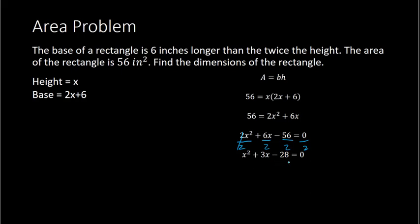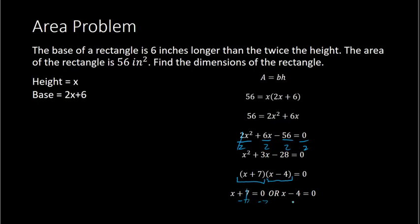Now I can check if factoring works — and it does. I can factor as x plus 7 times x minus 4, because 7 and negative 4 multiply to give me negative 28 and add to give me positive 3. Once factored, I set each part equal to 0: either x plus 7 equals 0 or x minus 4 equals 0. Solving gives x equals negative 7 or x equals positive 4.